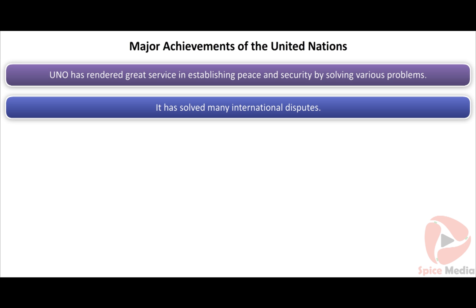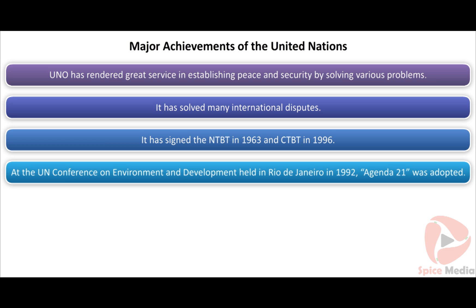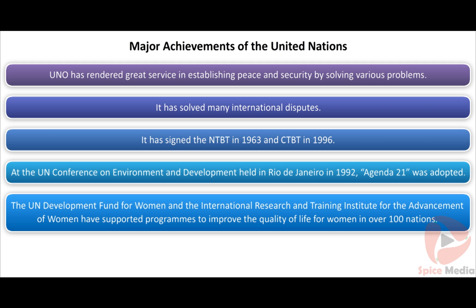The UNO settled disputes between Israel and Palestine, Iran and Iraq, and was instrumental in the withdrawal of Soviet troops from Afghanistan. It has signed many nuclear test ban treaties, including the NTBT in 1963 and the Comprehensive Test Ban Treaty (CTBT) in 1996. At the UN Conference on Environment and Development held in Rio de Janeiro in 1992, all nations adopted Agenda 21, a plan to promote economic growth while protecting natural resources.